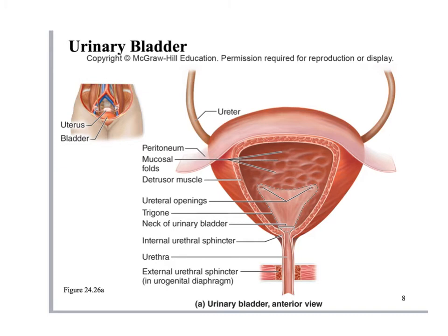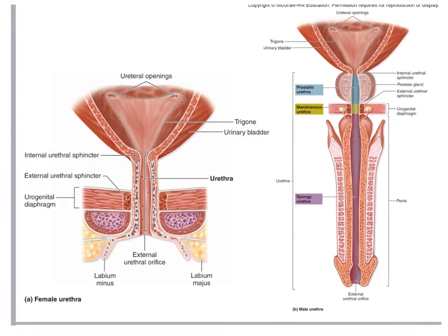The detrusor muscle contracts. You have to relax the internal urethral sphincter and the external urethral sphincter in order to void. The external urethral sphincter is a voluntarily relaxed muscle.